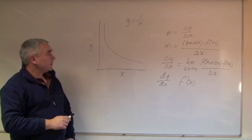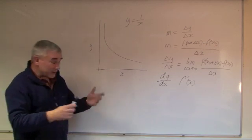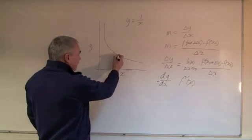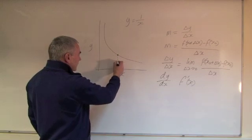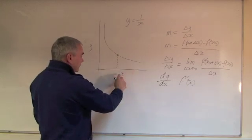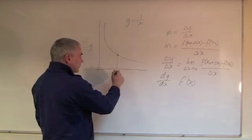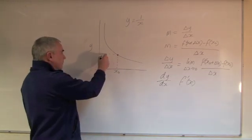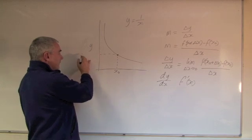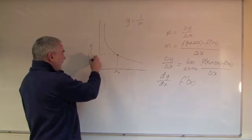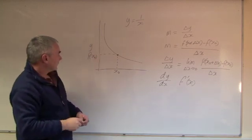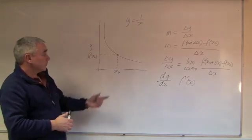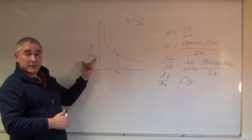If we're to find the gradient at a particular point, that's fairly straightforward. Let's pick a point and use the same naming convention we've used before. We'll call that X0. This will be the function at X0, which is going to be 1 over X0 at this particular point.